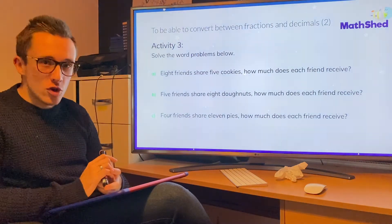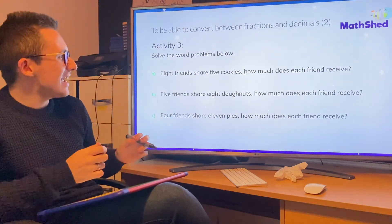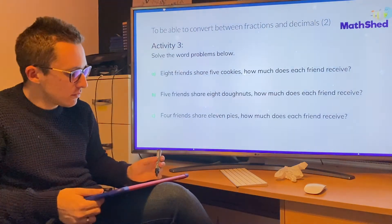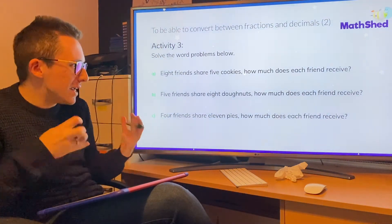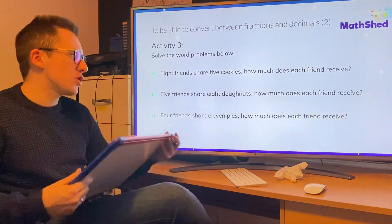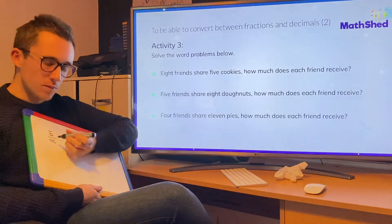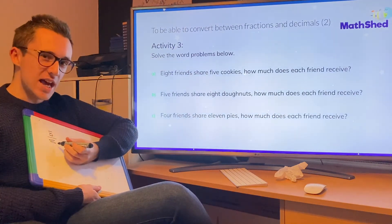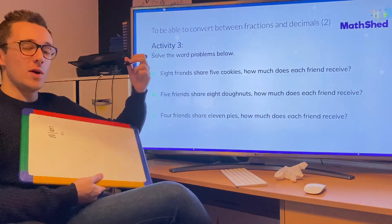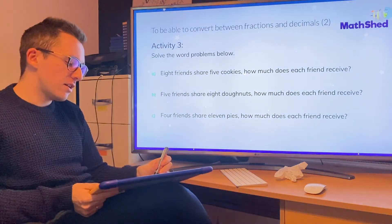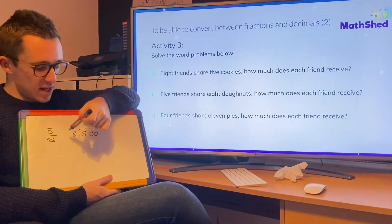Moving on then, we're looking at some word problems. This is something that both groups can have a go at. It just takes a little bit of getting your head around what the question's asking you to do. So the first one, it says eight friends share five cookies. I've got eight friends in total. So that's my denominator, because there are eight people. And I've got five cookies being shared between them. So my fraction is five cookies shared between eight people, five divided by eight. How much does each friend receive? That is asking me to turn it into a decimal. The way I do that is exactly what we've just been doing. So I'm going to take my denominator and put it on the outside, and then my numerator goes on the inside. And then I divide.